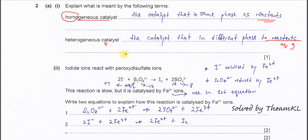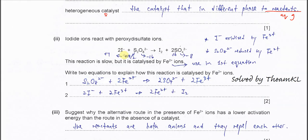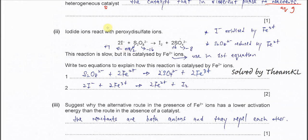Part 2: iodide reacts with peroxidisulfate (S₂O₈²⁻) and this reaction is slow, but it is catalyzed by Fe²⁺ ions. This is very specific — when you write the equations, you must start with iron(II). After that, the second equation can use iron(III). It must start with iron(II).